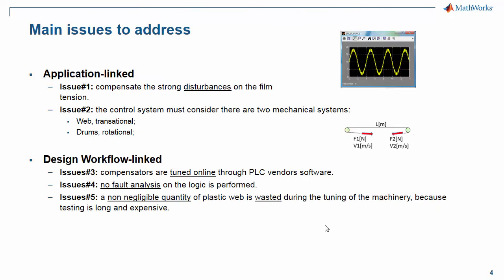However, this application is not trivial at all. Here are some of the issues associated with it. First of all, we have application-linked issues. For instance, compensating adequately the strong disturbances on the film tension coming from the part of the system preceding the region under control. And the fact that the control system must consider that there are two mechanical subsystems interacting together: a translational mechanic associated with the web system and a rotational mechanic associated with the rollers rotating around their axis.